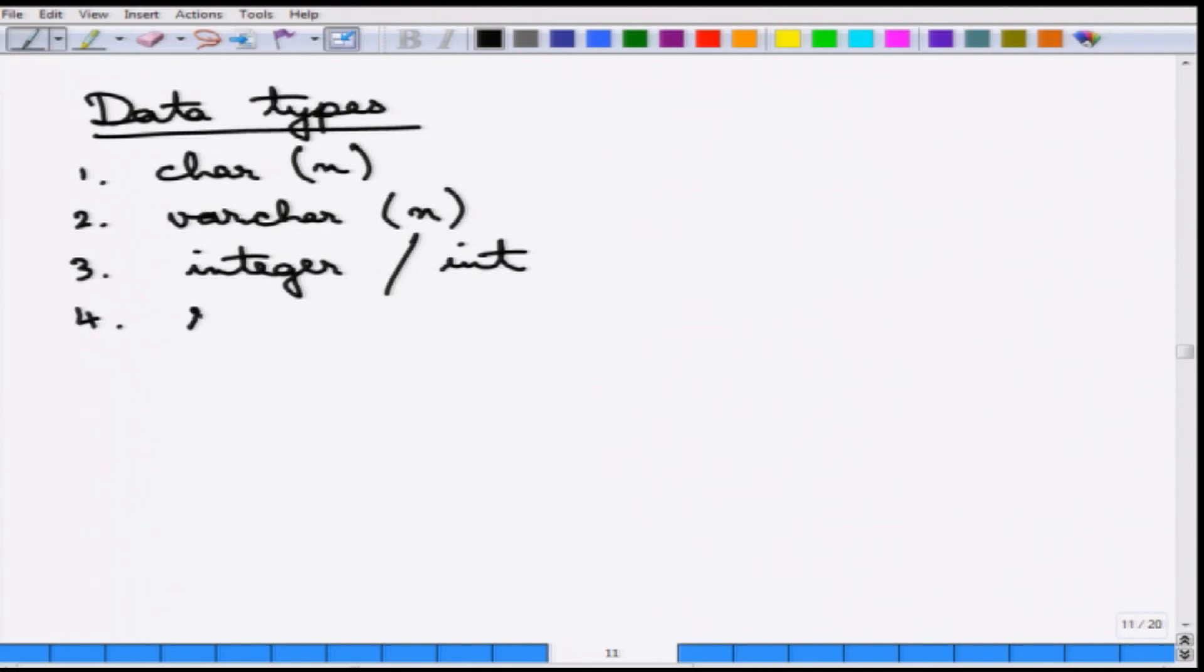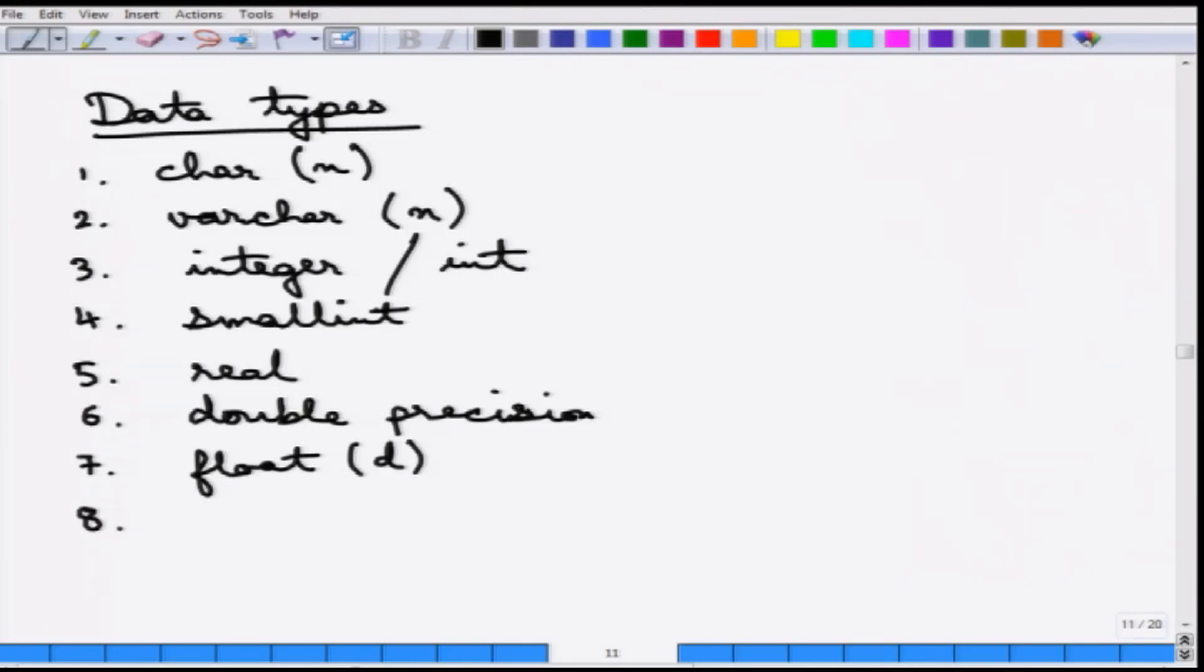You can specify a small integer. This is a small integer just like short in C - an integer that takes lesser amount of space to store. You can say it is a real, so it is a real number. You can say it is a double precision real - a real number with higher precision. You can say it is a float with some precision d, so the float will have at least d digits. And finally you can say it is a numeric a comma b. This is a floating point number with a total of a digits of which b is after the decimal point. So this is the total and this is after decimal point.